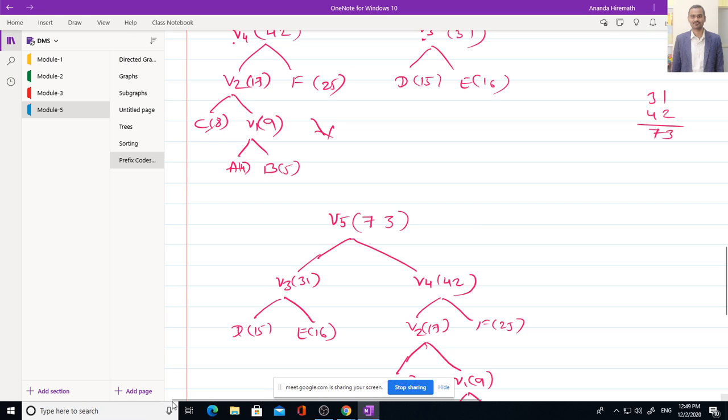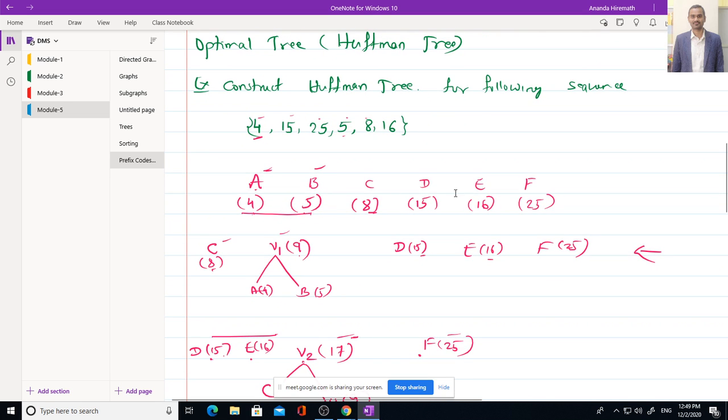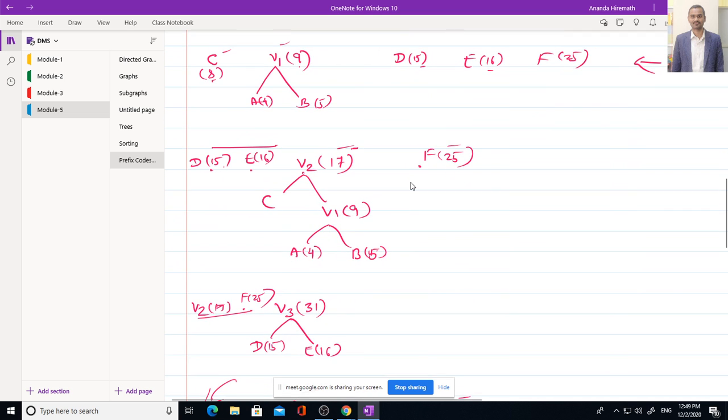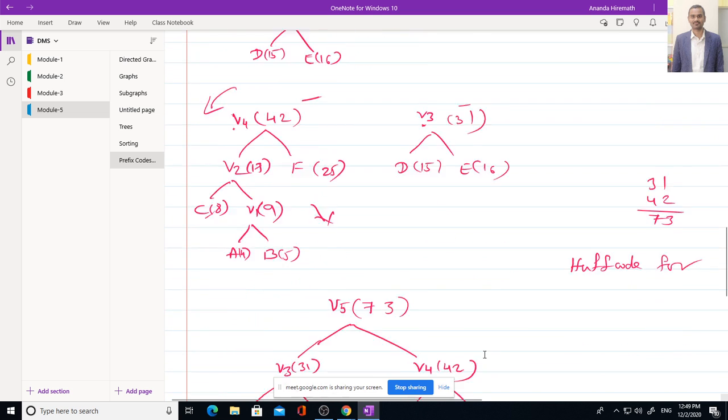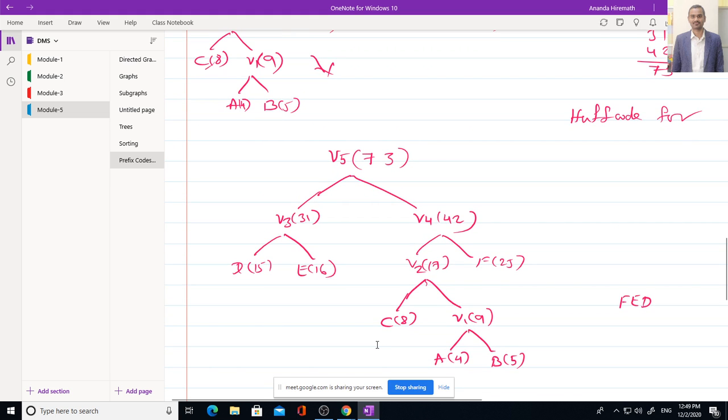Sometimes what they will ask you is Huffman code for some sequence. Let us assume they are giving F, E, D, this is the sequence. What is the Huffman code for F, E, D? We have answered the first question: draw Huffman tree. If Huffman code is asked for some sequence, what we should do is, if leaf is going towards next node on the left, we denote it by 0. If it is towards right, we denote it by 1.